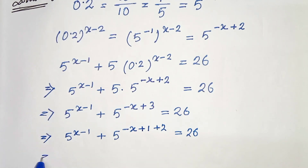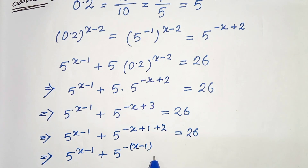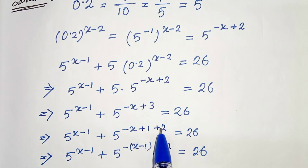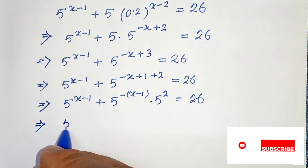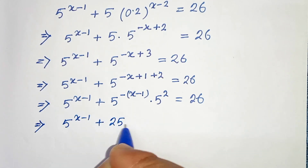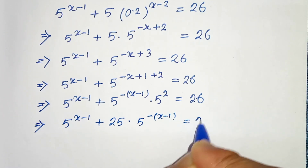Now let's write minus x plus 3 in terms of x minus 1. So we get 5 to the power x minus 1, plus 5 to the power minus of x minus 1, times 5 squared, equals to 26. Then 5 to the power x minus 1, plus 25 times 5 to the power minus x minus 1, equals to 26.